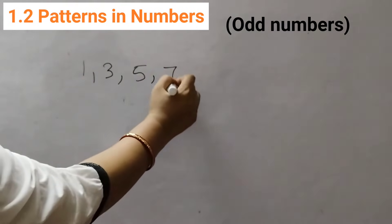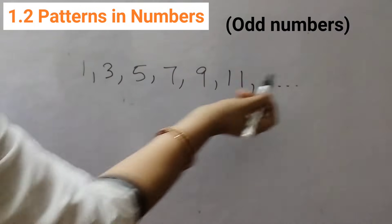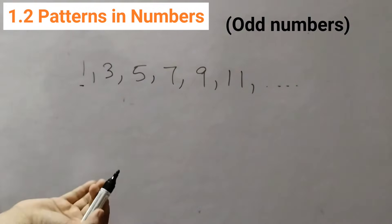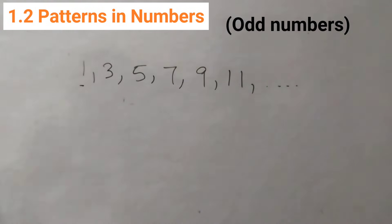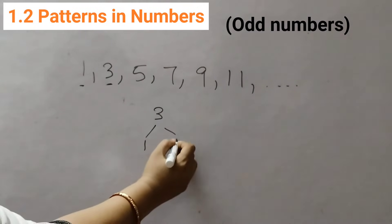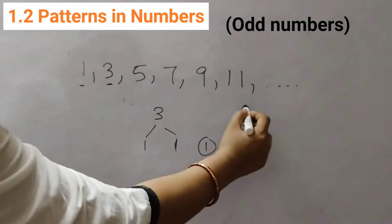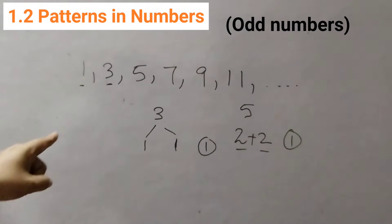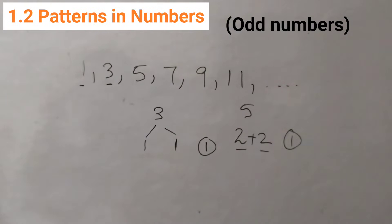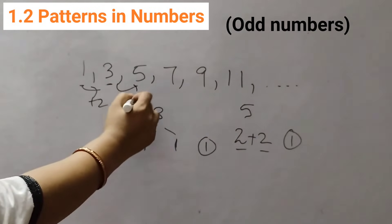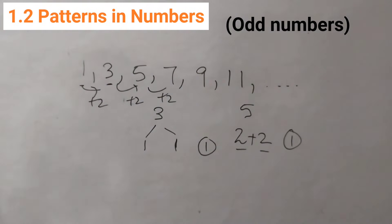Next we have odd numbers: 1, 3, 5, 7, 9, 11 and so on. These numbers cannot be completely divided into two equal parts. For example, if you have 3 chocolates, it can be divided as 1 and 1, but 1 is still remaining. 5 can be divided as 2 plus 2 equally, but 1 is still remaining. So mathematically, these numbers are not completely divisible by 2. The rule here is just add 2: keep adding 2 to get the next term.